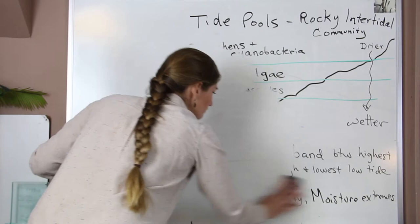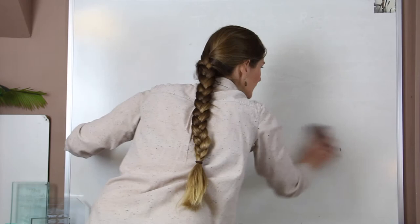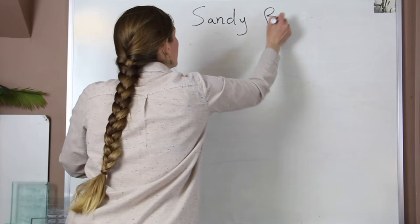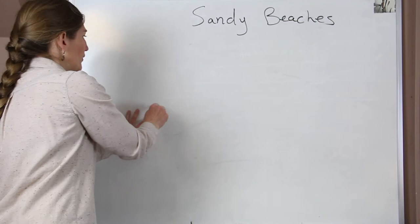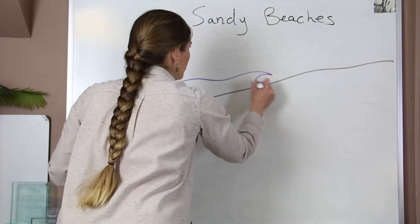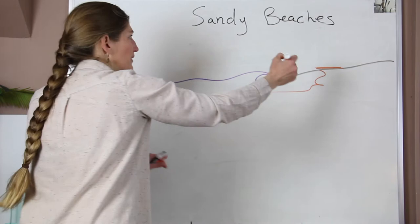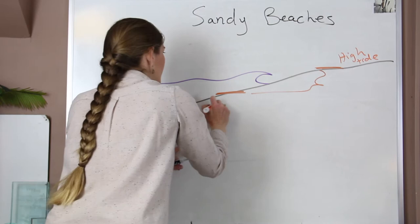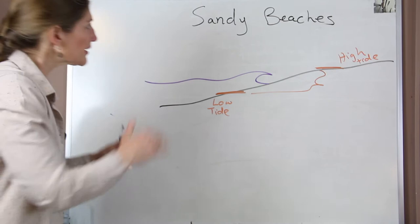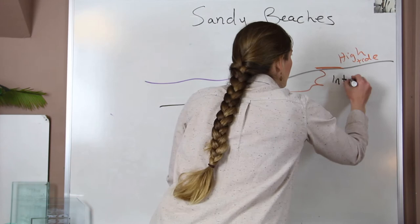Another place that deals with tides is along our sandy beaches. Just like our rocky zones, if we draw a sandy beach, we have waves coming in. The zone we're looking at is between our high tide mark and our low tide mark — this vertical zone in between experiences that change in moisture during the day. This is our intertidal zone.